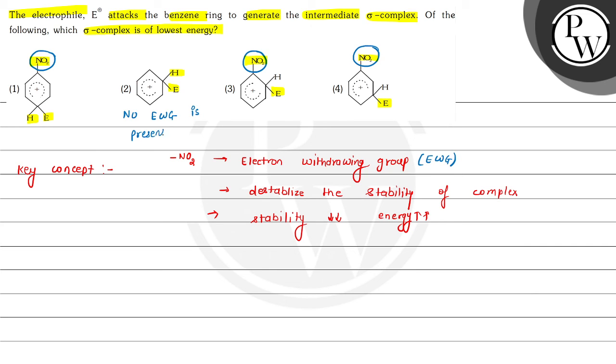So this will have highest stability and the lowest energy. We can write stability of this carbocation increases and energy decreases. So our correct choice for this question will be option second.